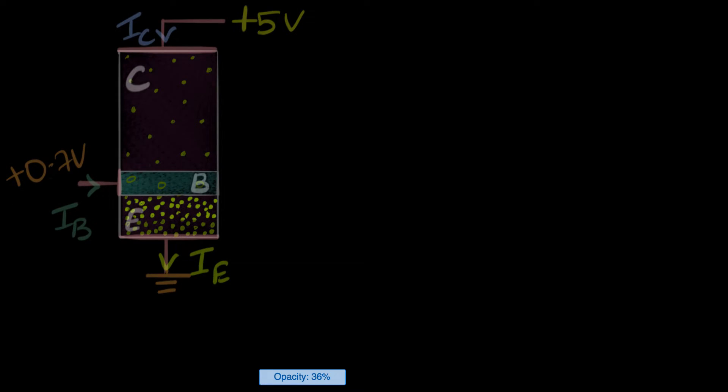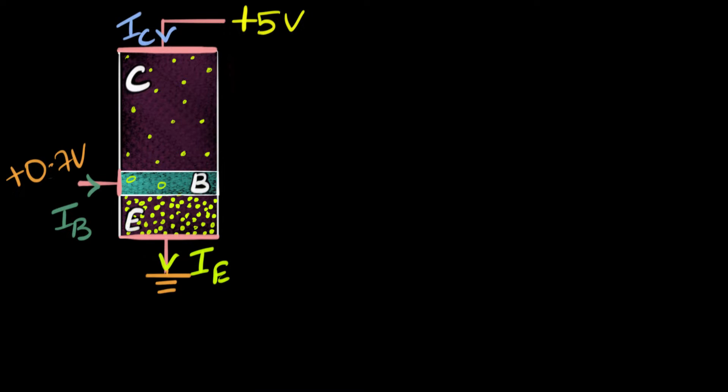In previous videos, we have seen that if you take an NPN transistor and make the connections in such a way that the emitter base is forward biased and the collector base is reverse biased, then the transistor acts like an amplifier.